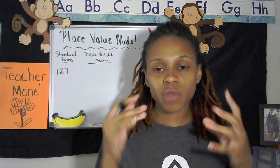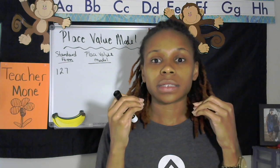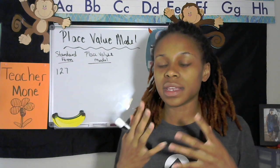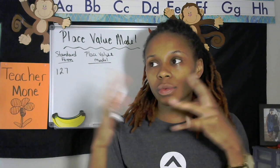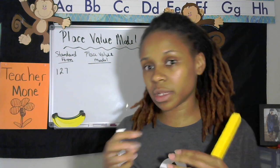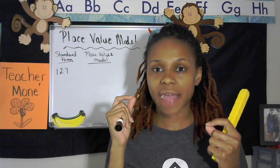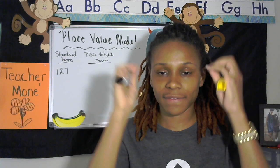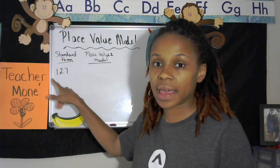The place value model is a representation in a drawing to show what each number looks like or what each number represents. What I'm going to show you today is more abstract. Once kids have actually used manipulatives, understand how to use them, and have attached that representation to the actual number in their brain, then they can move toward the more abstract approach I'm about to show you.